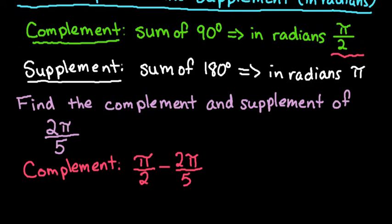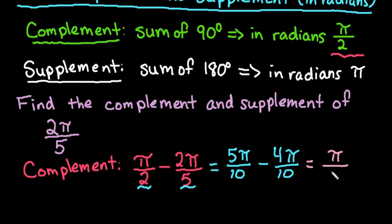Now remember that when you're adding or subtracting fractions that they do have to have a common denominator. So the common denominator of 2 and 5 would be 10. The first one we would have to multiply by 5, so we would end up with 5π over 10 minus 4π over 10. Now that they have a common denominator we just combine the numerators together. So 5π over 10 minus 4π over 10 ends up being π over 10.